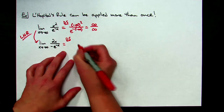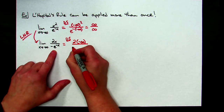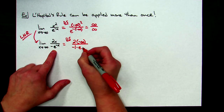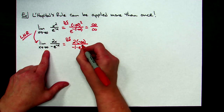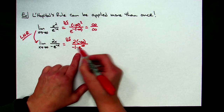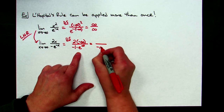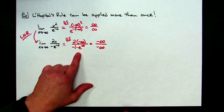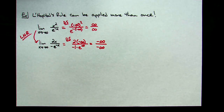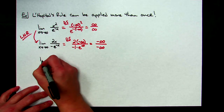Let's try a direct substitution to see if it helped. In the numerator I have 2 times negative infinity. In the denominator, the negative out front times e to the negative infinity — negative times negative gives a positive — so e to a really big positive number is infinity. But that 2 times negative infinity in the numerator gives negative infinity. So I have negative infinity over negative infinity. Applying L'Hôpital's Rule one time did not help.